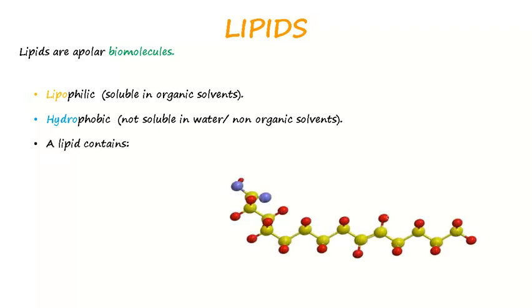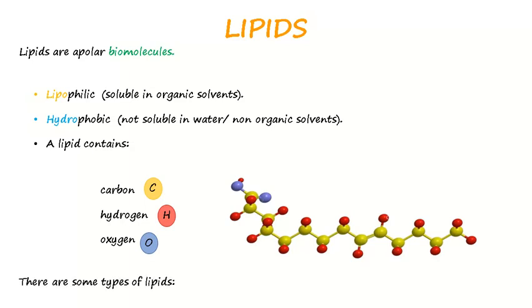A lipid molecule contains carbon, hydrogen, and oxygen. The most essential classification of lipids divides them into simple lipids, compound lipids, and derived lipids.